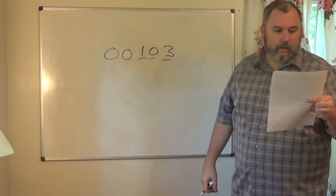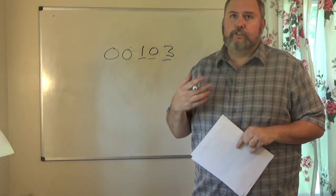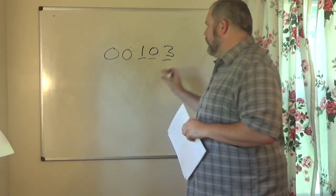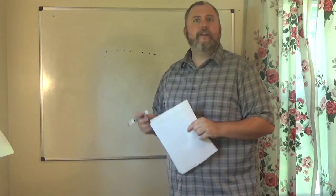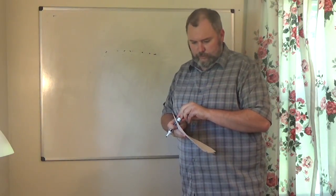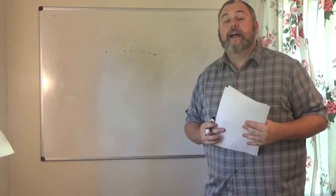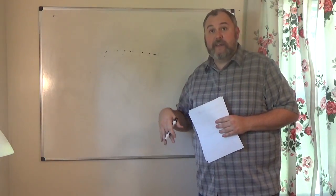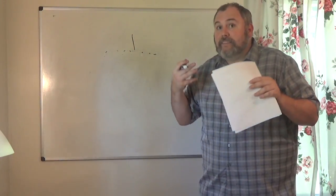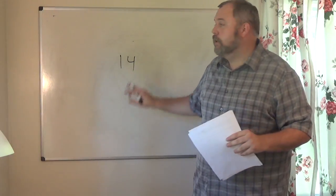Now that we understand what significant digits are and how to find them, you should be able to identify the accuracy and precision of a number fairly quickly. Let's go on to the next page. Accuracy is the number of significant digits a number has. All those things we just did on that previous page — we were finding accuracy. That's all it was. The accuracy of 1 is 1. The accuracy of 14 is 2.